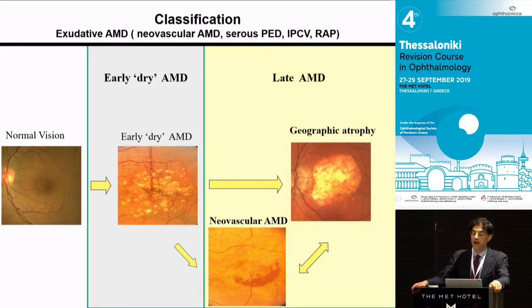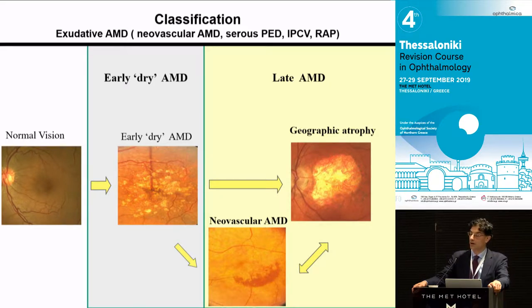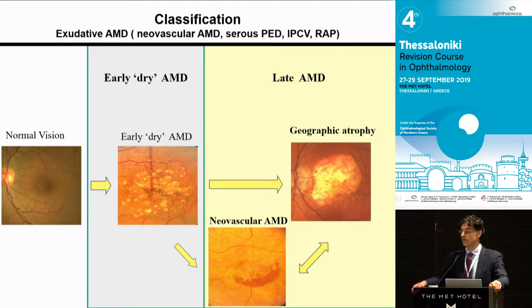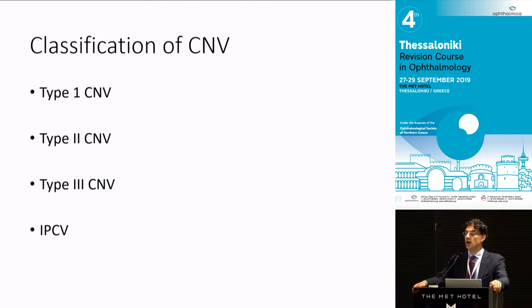Age-related macular degeneration is still the commonest cause of poor vision in the Western world. The default pathway goes from early, dry age-related macular degeneration — the hallmarks being drusen and pigment alterations in the macula. If we all live long enough, we think we'd all get geographic atrophy. A subgroup of patients may develop choroidal neovascularization as a secondary complication, though we don't know what the tipping points are. When you get choroidal neovascularization, it has different classification systems.